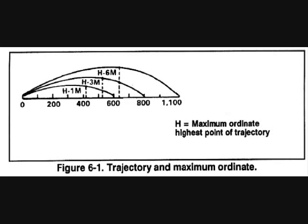By aiming the muzzle of your weapon higher, you move the beaten zone further away. By aiming the muzzle lower, you move the beaten zone closer in. With this in mind, an infantry soldier and his weapon can employ a surprisingly large number of different firing patterns to obtain hits on the enemy.